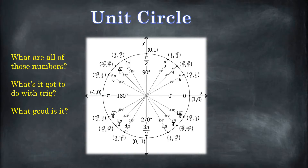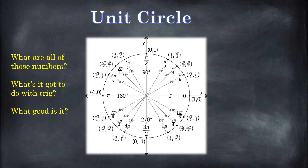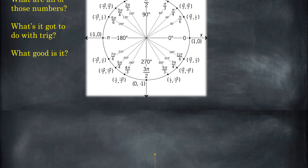There are shortcuts to help you construct a unit circle and come up with all of these numbers, and I'll get to that in a future video. But I think it's really, really important to understand what this means and where it comes from, because that's your foundation of understanding. Shortcuts just help you get answers. They might help you reconstruct the understanding, but the understanding is what's most important.